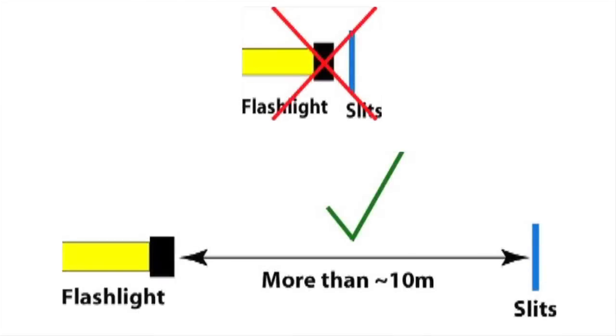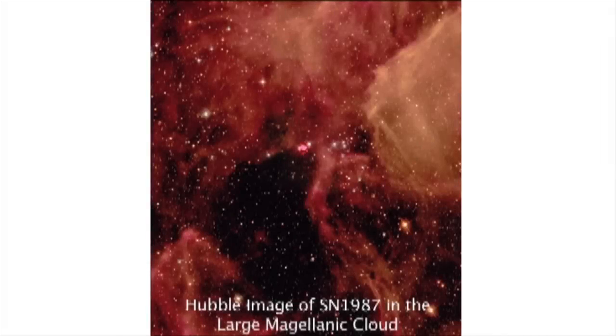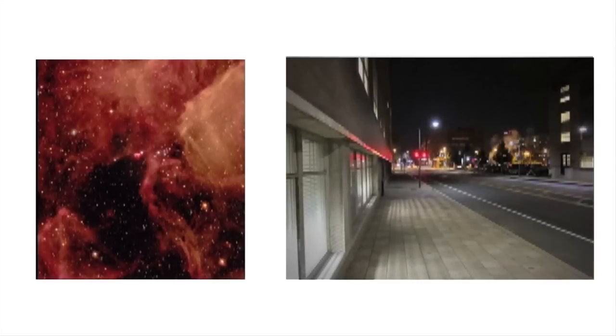Another approach is to simply place the source far away from the double slits. This approach allows astronomers to perform stellar interferometry experiments and will allow you to view interference patterns using street lights at night as a light source. A double pinhole system is quite easy to construct at home and can produce striking interference patterns using street lights as a light source.